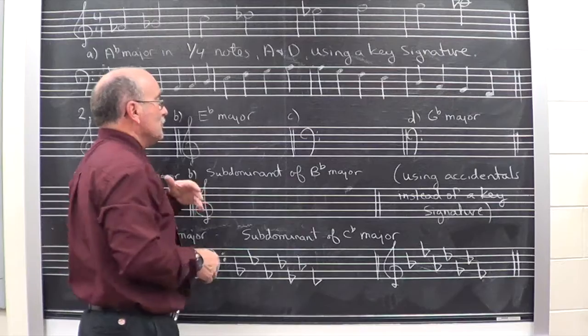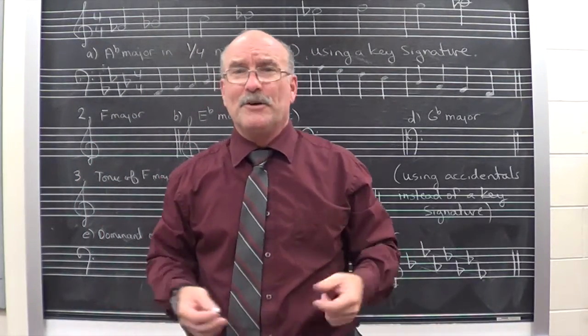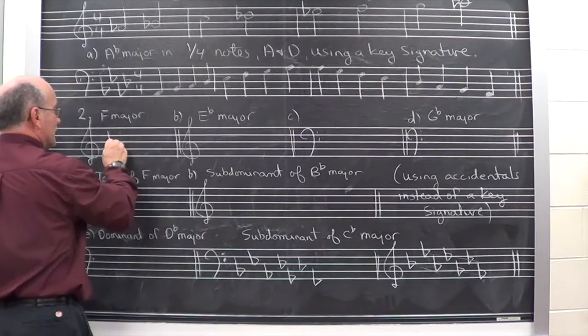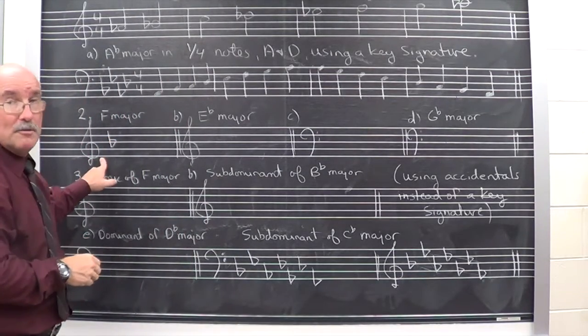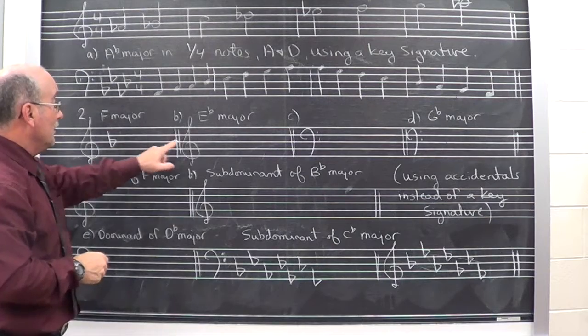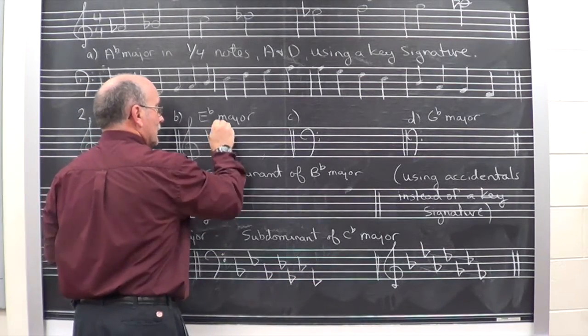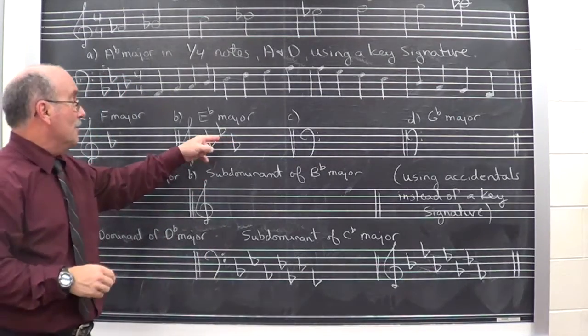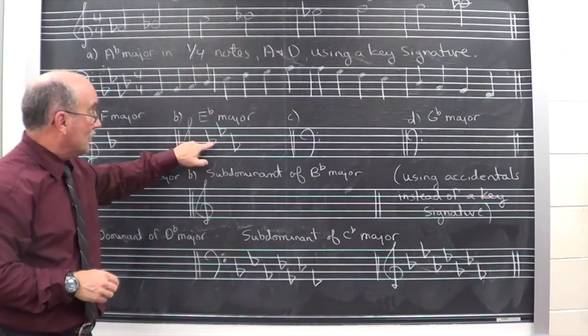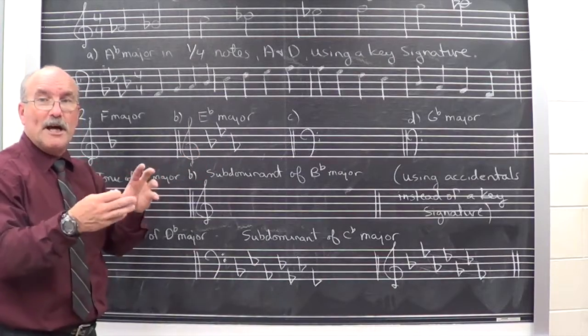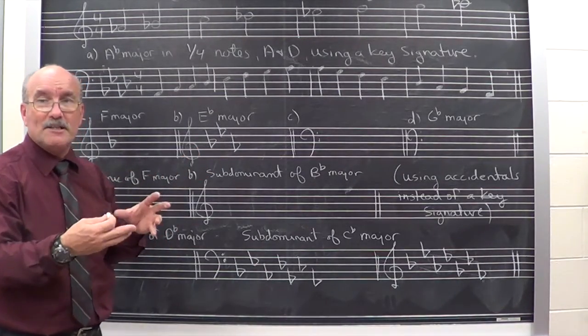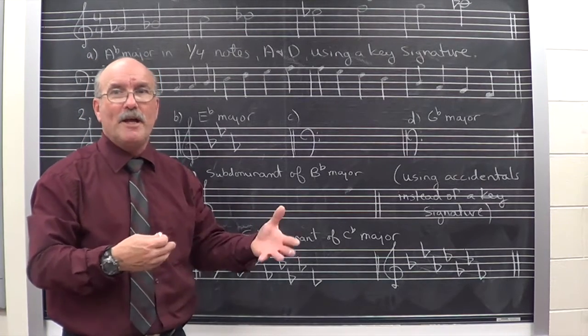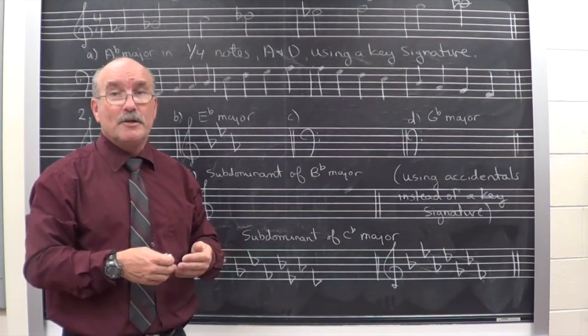Next part asks you to write the key signature. Well, that's pretty simple. Whatever it tells you. F major. F major has one flat, B flat. I'm in the treble clef. That's where it's located. Write E flat major in the treble clef. There it is. Three flats. B, E and A. Make sure that you indicate the right line and the right space. Do not let it overlap any line or any space so that there might be some type of ambiguity. A way of taking it two different ways. If you do that, it's wrong.